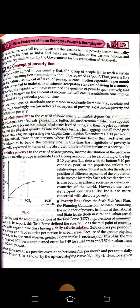It is generally said that in our country there are groups of people who fail to reach a certain minimum consumption standard — they should be regarded as poor. Thus, the poverty line can be defined as the cut-off level of per capita consumption expenditure per month, which is needed to maintain a minimum acceptable standard of living in the country.